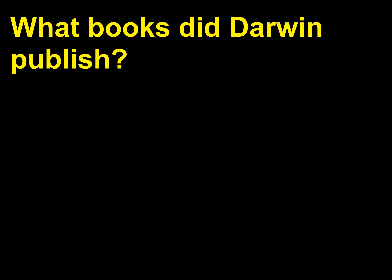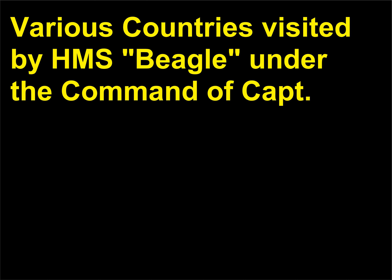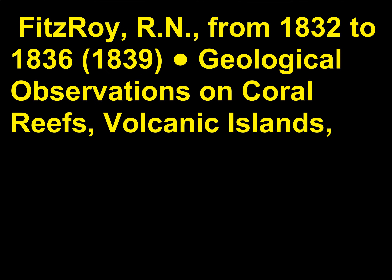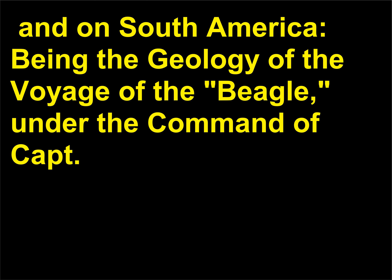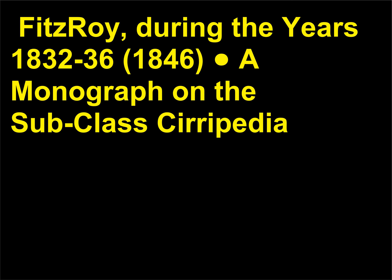What books did Darwin publish? Journal of Researches into the Geology and Natural History of the Various Countries Visited by HMS Beagle, 1839. Geological Observations on Coral Reefs, Volcanic Islands, and on South America, being the geology of the voyage of the Beagle, 1846. A Monograph on the Sub-class Cirripedia, 1851 to 1854.